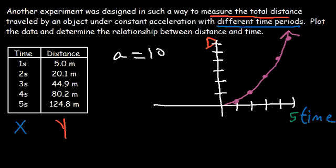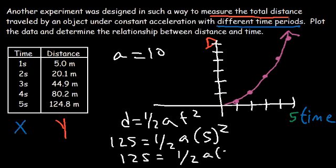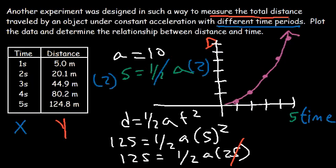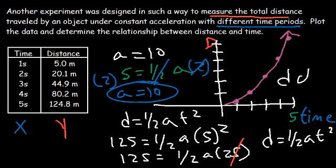If we use the last point, (5, 125), and round 124.8 to 125 for the distance with t = 5: 5 squared is 25. Divide both sides by 25 — 125 divided by 25 is 5 — so we have 5 = ½a. Multiply both sides by 2, and we get a is approximately 10. The slope of a distance-time graph gives you the speed; for a displacement-time graph, it gives the velocity; and the slope of a velocity-time graph is the acceleration. The relationship between distance and time shows that d is proportional to t squared — that's why we call it quadratic.